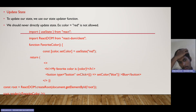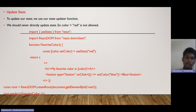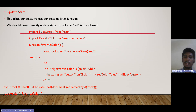Now if we need to update the state, we need to use the function setColor. We should never directly update the state — for example, color equals red is not allowed. The setColor function should be used to update the color; we should not directly update it.